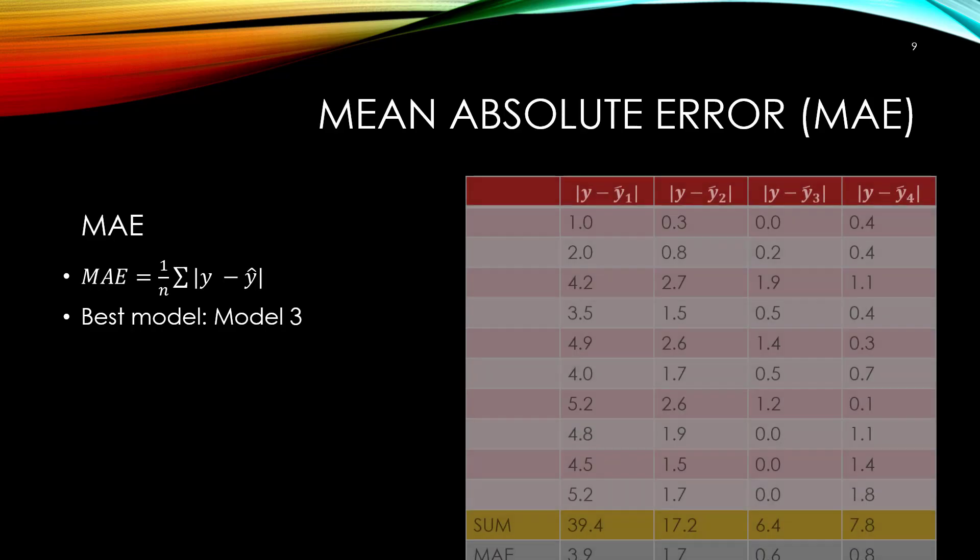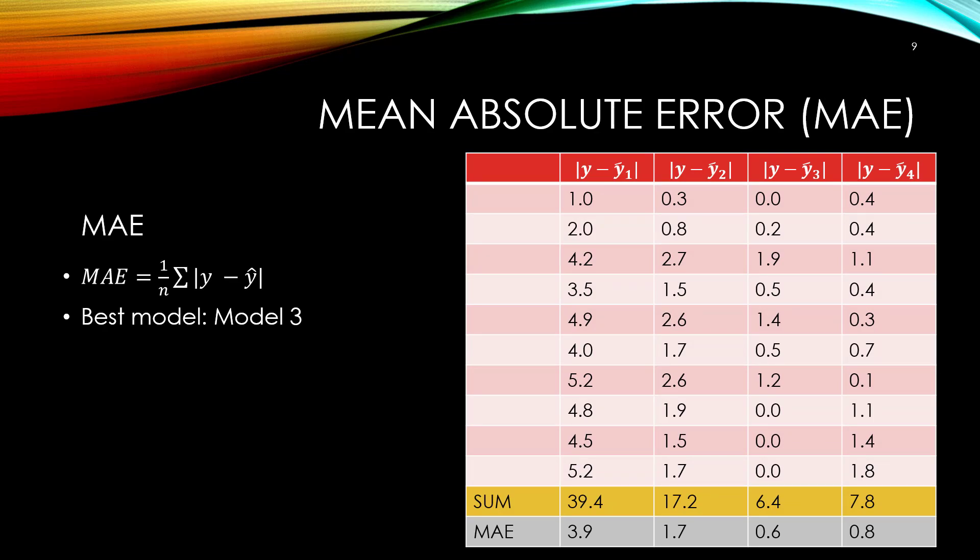The average error is faulty because averaging over positive and negative values might result in zero. Instead, if we look at the absolute value of the differences between Y and Y-hat, averaging over positive values only will not suffer from the canceling effect of positive and negative values. The mean absolute error, or MAE, is the average of the absolute values of the differences between Y and Y-hat. The best model according to MAE is model 3.